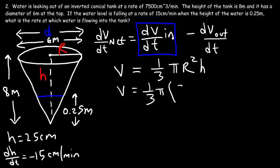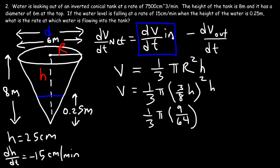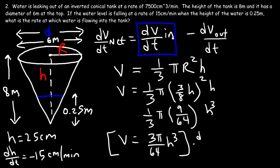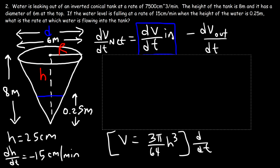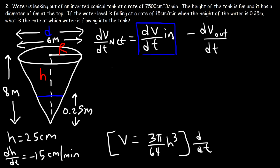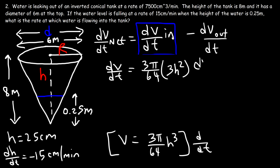Let's replace r with (3/8)h in the volume formula. Three squared is 9, eight squared is 64, and h squared times h is h cubed. One-third of 9 is 3, so V equals 3π/64 times h cubed. Now we can differentiate both sides with respect to t: dV/dt equals (3π/64) times 3h squared times dh/dt.